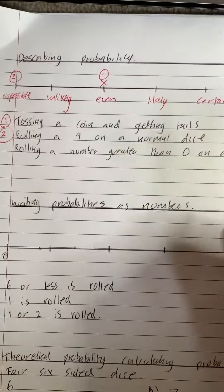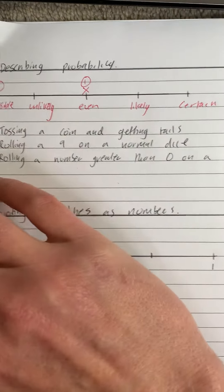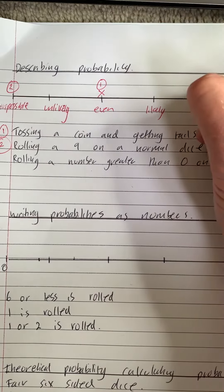And the third one, rolling a number greater than zero on a dice. Now if you roll a dice you're going to have a number greater than zero, so that's going to be certain.